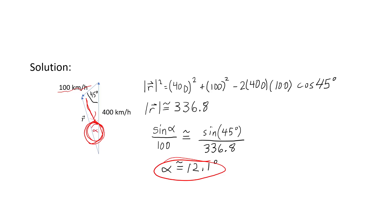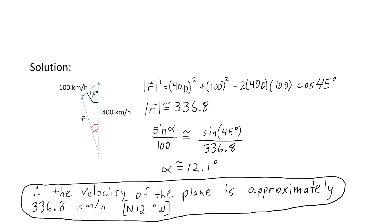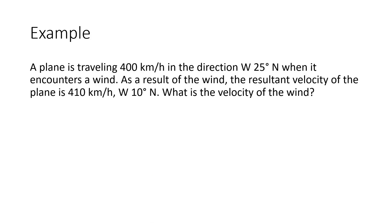We see that alpha is roughly 12.1 degrees, and so we can state the velocity of the airplane is approximately 336.8 kilometers per hour, north 12.1 degrees west.